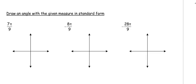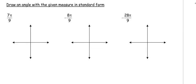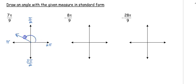Now we're going to be drawing angles in radian form. Instead of 90, 180, 270, 360, we use pi over 2, pi, 3 pi over 2, and 2 pi. If I'm looking at 7 pi over 9, that's slightly less than 1 pi, so I'll end up just shy of the pi axis. If you're unsure, go into your calculator and do 7 divided by 9 to get the decimal — don't put the pi in.